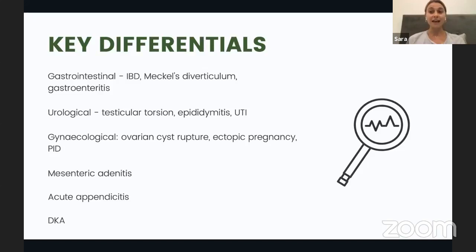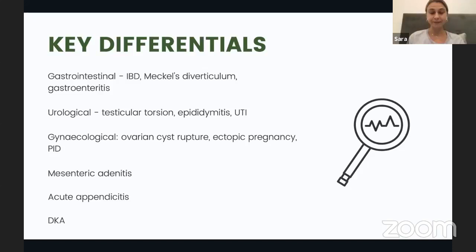Acute appendicitis is most common in people in the second to third decade of life — sometimes first to third depending on the source. DKA is also an important differential to bear in mind because it can present very similarly to appendicitis. This is why it's very important to check blood glucose levels for patients who come in complaining of abdominal pain and vomiting.